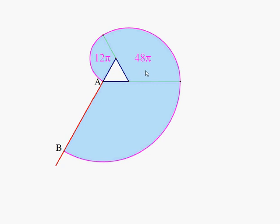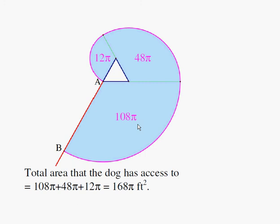Area of the second sector, the second largest sector is 48 pi from our previous slide. Area of the third largest sector is 108 pi from one of the previous slides. So what is the total area the dog has access to? All I need to do is add the three areas. 108 pi plus 48 pi plus 12 pi is 168 pi. So that's my final answer. The total area the dog has access to is 168 pi square feet.